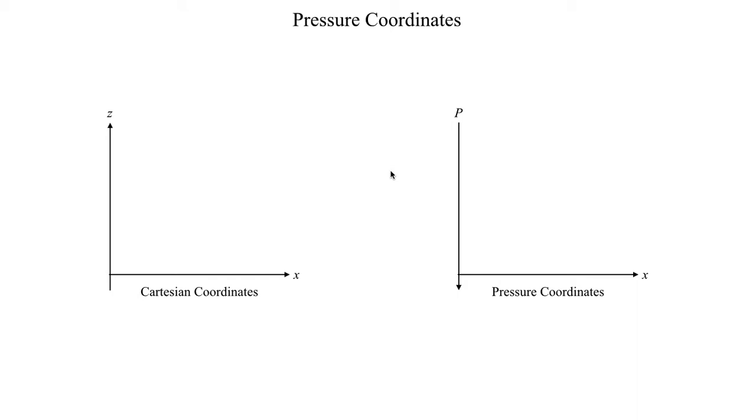But that's going to do it for this first segment, just sort of introducing pressure coordinates and giving a general overview. In the next segment we will take a look at how the vertical velocity changes when we go into using pressure coordinates. With that, I will see you all in the next segment.